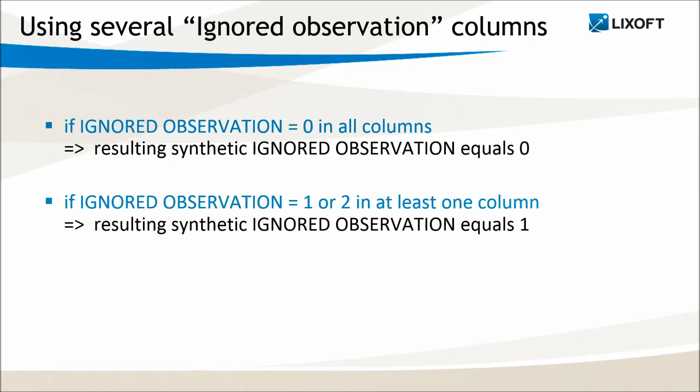It is possible to have several ignored observation columns, and they are combined into a single column by Monolix in the following way. If the value is zero in all ignored observation columns, then the resulting synthetic value is zero, and if in at least one column I have a value one or two, then the resulting synthetic value is one.